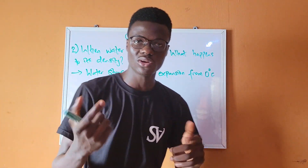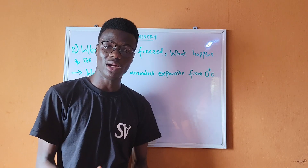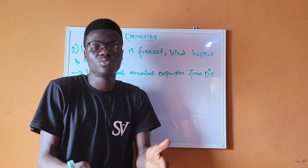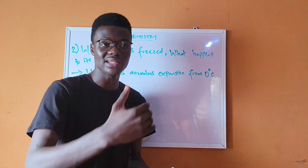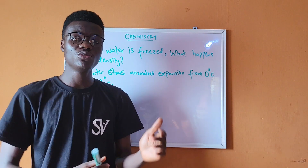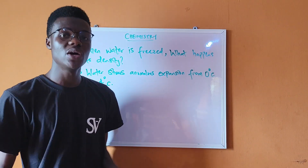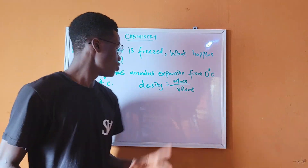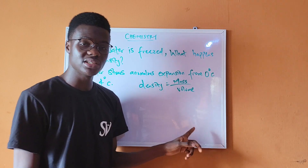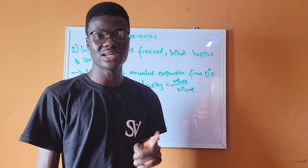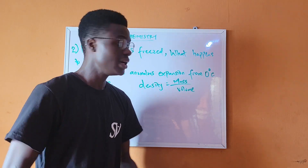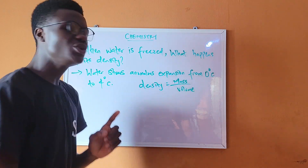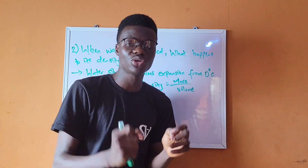Normally when you heat a liquid, it expands — its volume increases while its density decreases, since density and volume are inversely proportional. But water behaves anomalously: from 0°C to 4°C, water contracts instead of expanding, which is the opposite of what a normal liquid does.